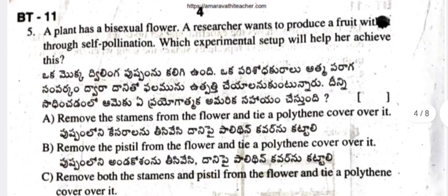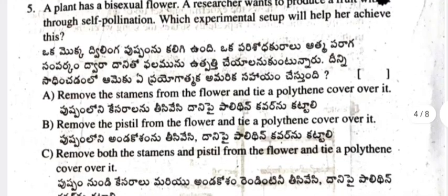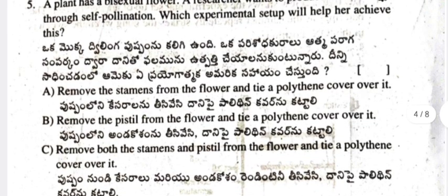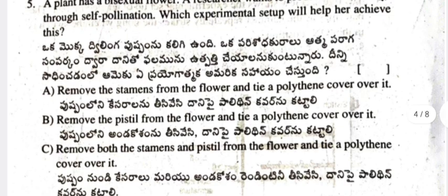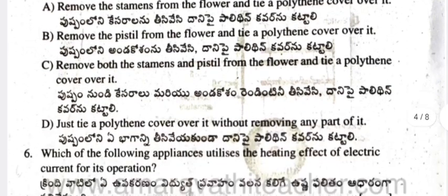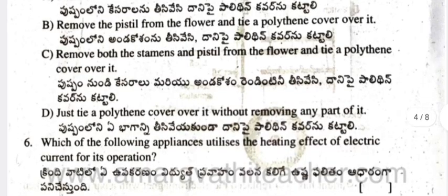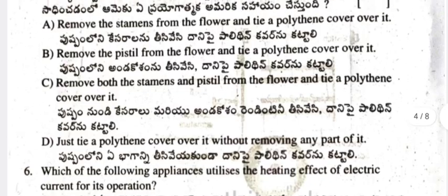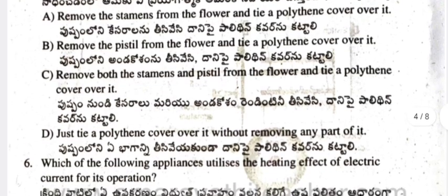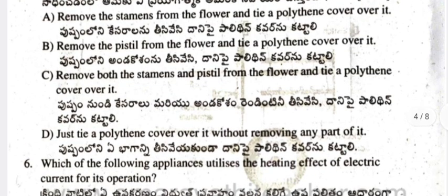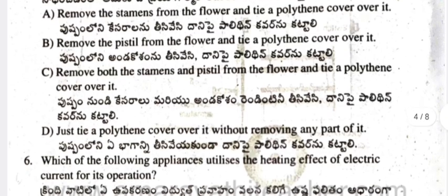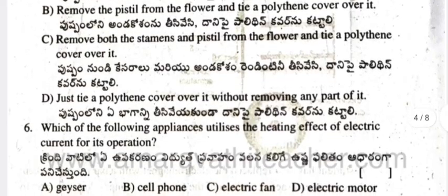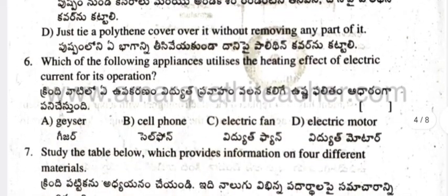Question 5: A plant has a bisexual flower. A researcher wants to produce a fruit through self-pollination. Which experimental setup will help her achieve this? (a) Remove the stamens from the flower and tie a polythene cover over it. (b) Remove the pistil from the flower and tie a polythene cover over it. (c) Remove both stamens and pistil and tie a polythene cover over it. (d) Just tie a polythene cover over it without removing any part.